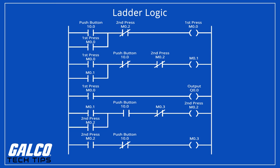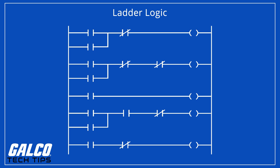Ladder logic was based off of circuit diagrams of relay logic hardware. The term ladder logic stems from the look of the programming language and its resemblance to ladders, with two vertical rails and a series of horizontal rungs between them.